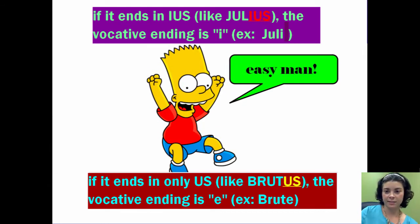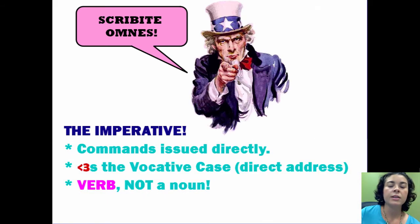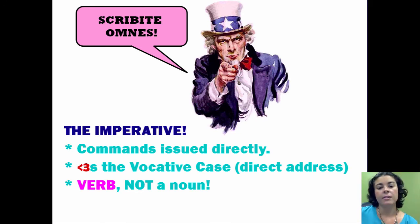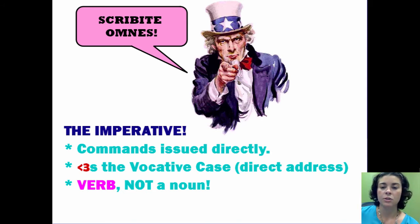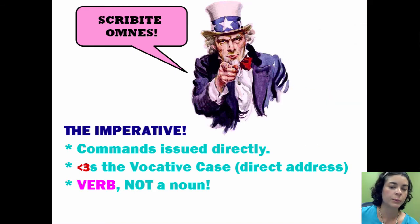So very easy. Scribite omnes — the imperative. These are commands issued directly. When I am talking to someone and I want them to do something and I'm not being particularly polite about it, the commands are usually seen with the vocative case, which is our direct address. And remember, it's important that this is a verb, not a noun. You cannot make a noun imperative, nor can you make a verb vocative.